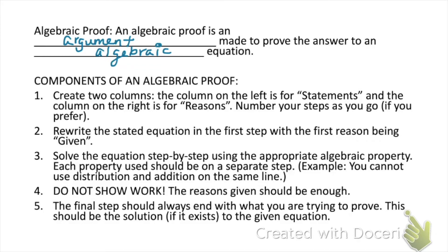The key point is that we're always going to start with creating two columns. The first column will be the statement column, and on the right will be our reasons. Our statements will be the steps in our algebraic equation as we solve, and for each statement we're going to have to give a reason, which will be one of our algebraic properties. It's always important to number our statements and reasons as we go to keep things organized.